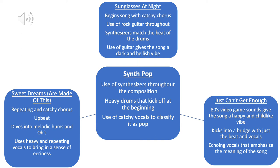The last song that was chosen was Just Can't Get Enough. This song has an 80s video game sound, and it gives the song a happy and childlike vibe. This song kicks into a bridge with just the beat and the vocals, so it really emphasizes the meaning of the song. And this song has vocals that kind of echo the main chorus throughout, and it really emphasizes the meaning of the song — like, these guys Just Can't Get Enough.